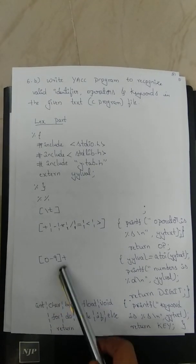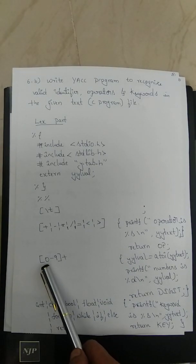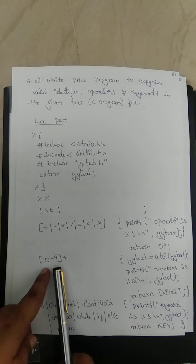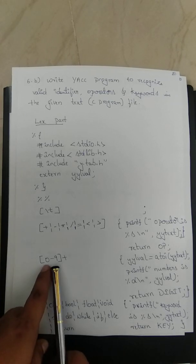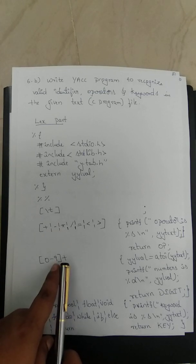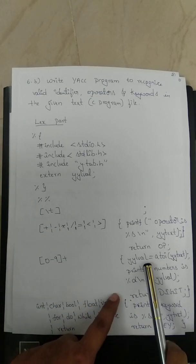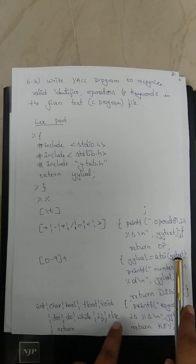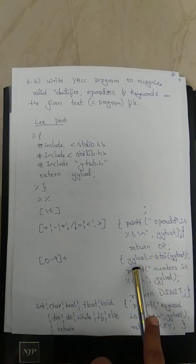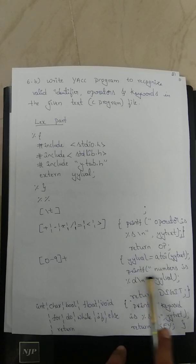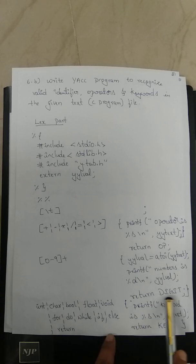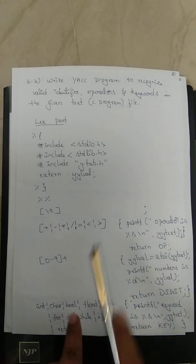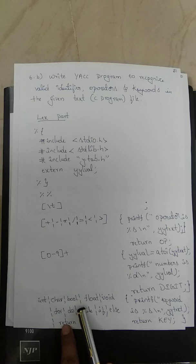We also consider numbers, though that's not explicitly asked in the question — you can skip it if you want. The regular expression [0-9]+ matches any number. The action converts the match from ASCII to integer, stores it in yylval from yytext, prints it with printf, and the token name for numbers is DIGIT.